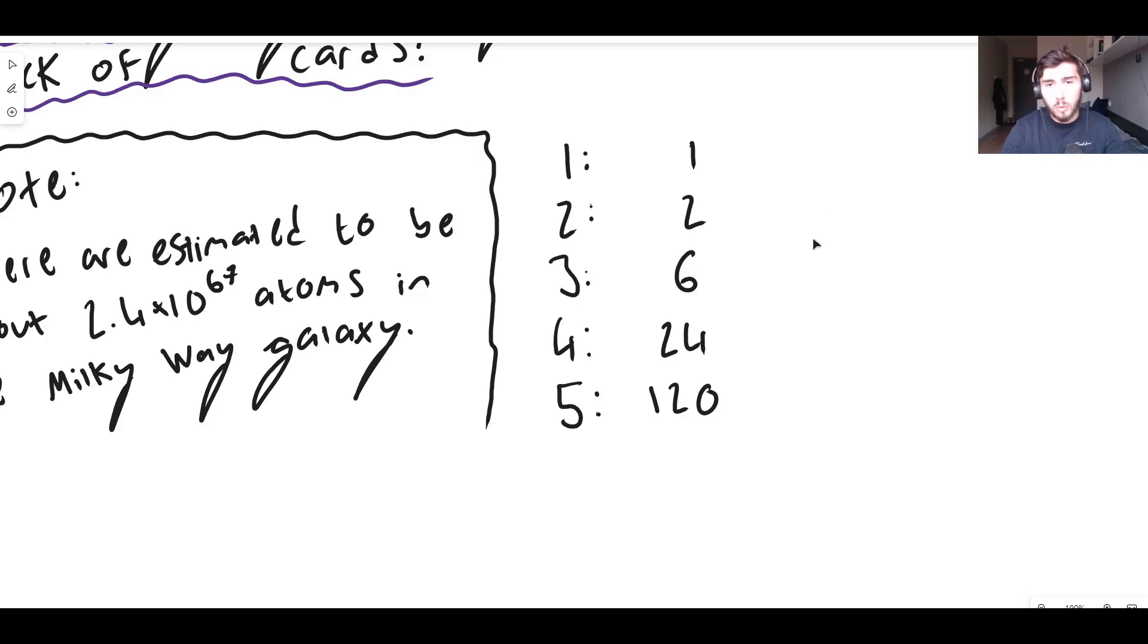It doesn't matter what the objects are. They could be books on a shelf. They could be stationary. They could be playing cards. They could be anything. But how am I generating this sequence of numbers? 1, 2, 6, 24, 120. And what would the next one be?